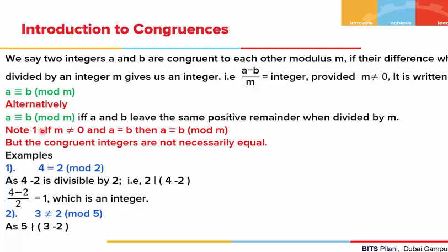A few things you should note. Given that m is non-zero and a is equal to b, then a will always be congruent to b mod of m. But vice versa is not true — if a is congruent to b, it does not imply a will be equal to b.